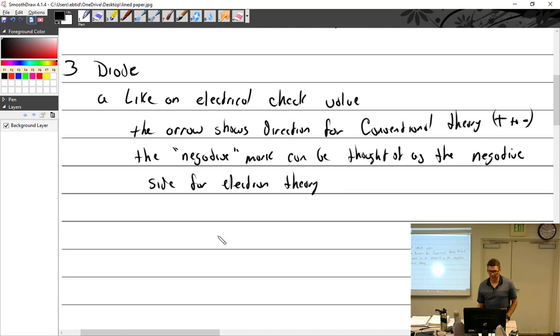Forward bias is this way if the positive is here and negative there. Another way of looking at it is this little thing right here is the negative. Attach the negative to the negative side and it's going to be on. The arrow shows direction for conventional theory, which is plus to minus. The negative mark can be thought of as the negative side, or electron theory.